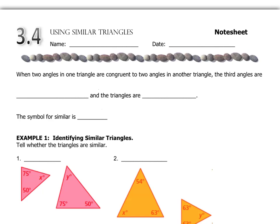Today we're going to talk about using similar triangles to help solve some problems. The first thing we want to pay attention to is that when two angles in one triangle are congruent to two angles in another triangle, the third angles are congruent and the triangles are similar.